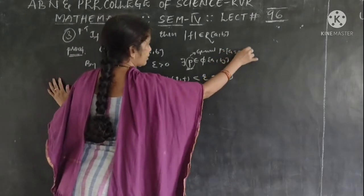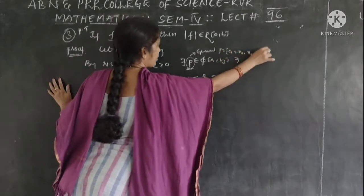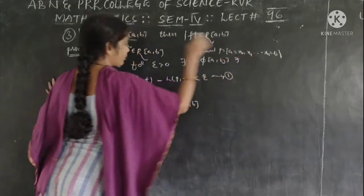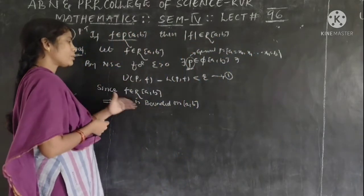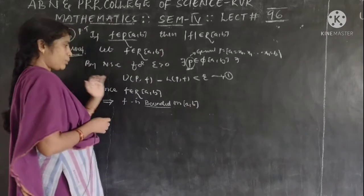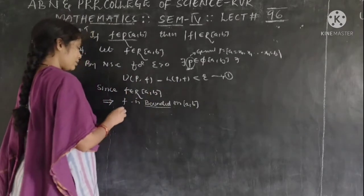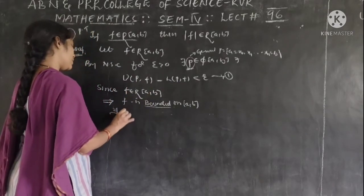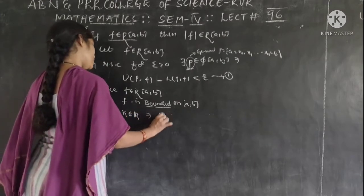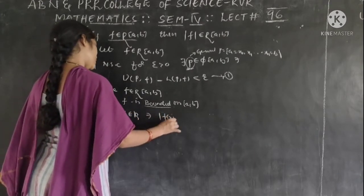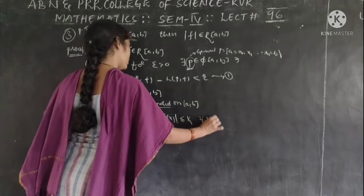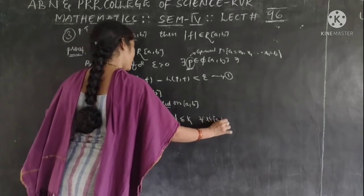The partition is: a equals x₀, x₁, and so on, xₙ equals b. Since F is bounded on each and every segment of the partition, there exists a real number k such that modulus of f(x) is less than or equal to k for every x in the closed interval [a, b].